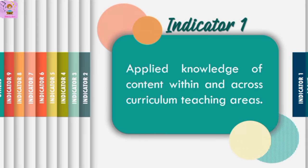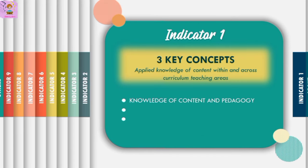The first classroom observable indicator of the COT-RPMS for Teachers 1 to 3 is applied knowledge of content within and across curriculum teaching areas. In this indicator, we will tackle three key concepts we need to understand. Teachers are expected to apply accurate, in-depth, and broad knowledge of content and pedagogy to create a conducive learning environment that enables sophisticated understanding of the teaching and learning process to meet individual or group learning needs within and across curriculum teaching areas.